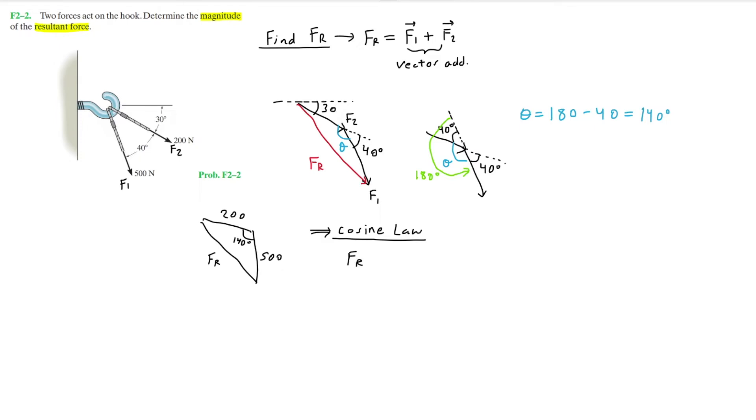And so the rest should be fairly simple. We just plug in our known values into the cosine law formula. So putting this into the calculator, we're going to get Fr equals 665.7 Newtons. So that right there is the magnitude of the resultant force.